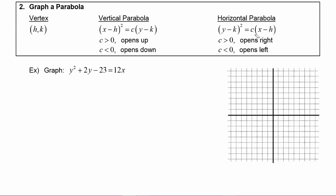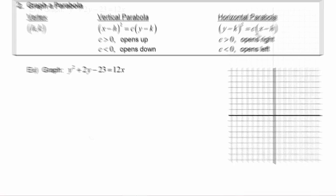So let's take a look at an example to see how this works. In this example we have to graph y² + 2y - 23 = 12x. Because the y is squared and the x is linear, that tells you that this is going to be a horizontal parabola.